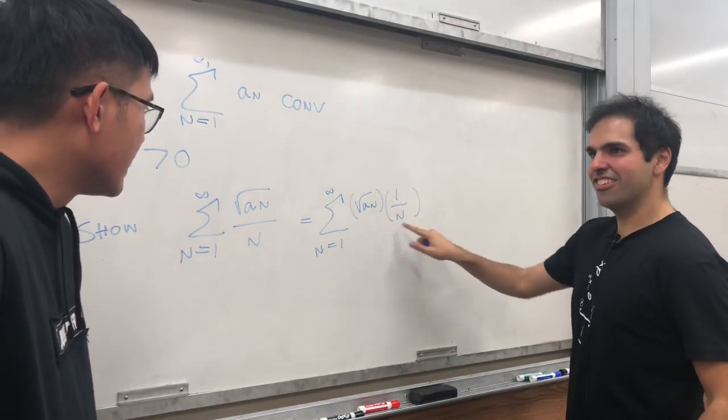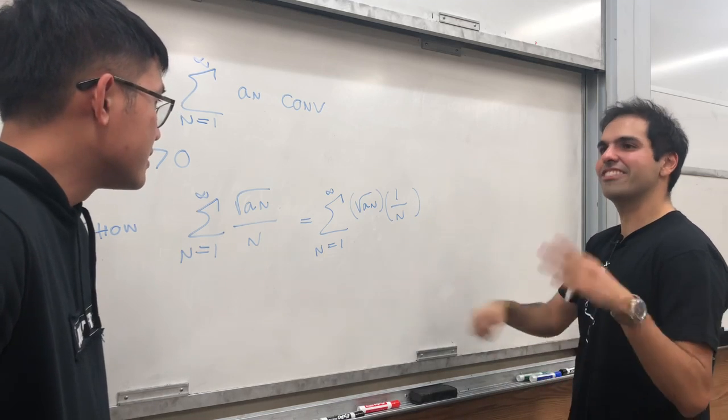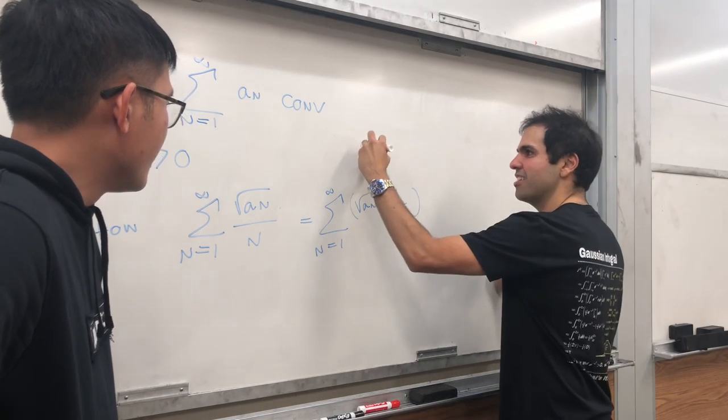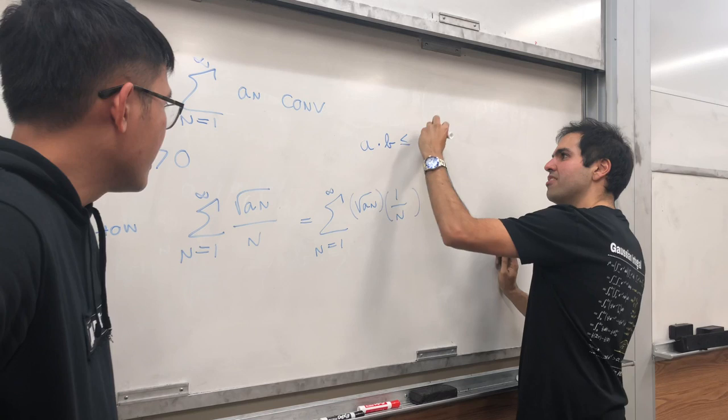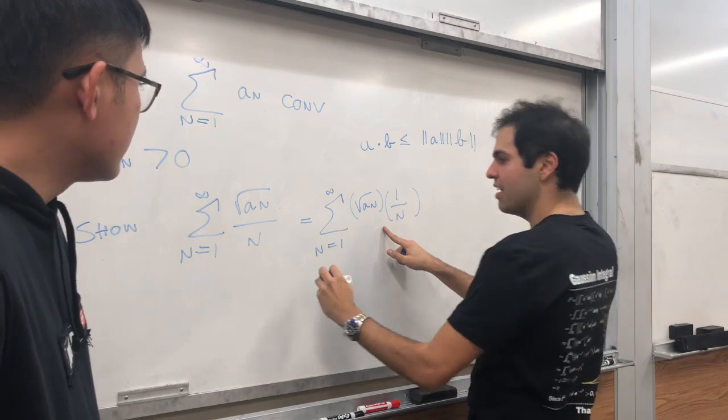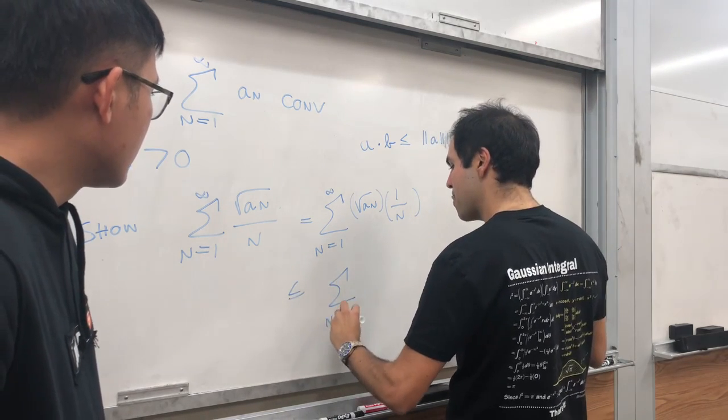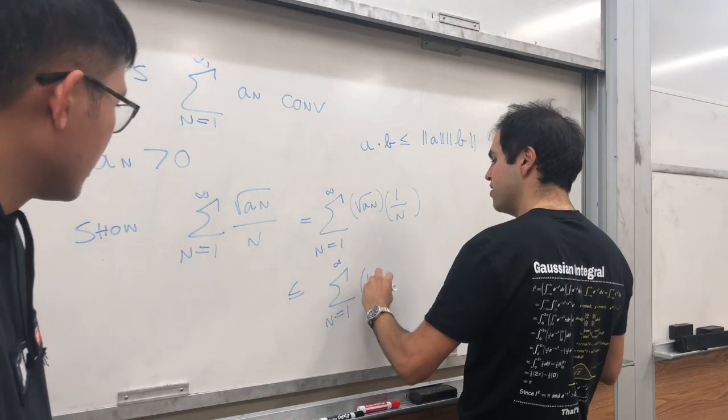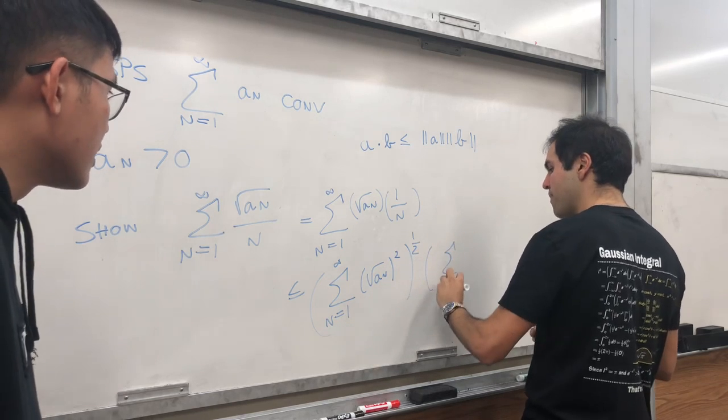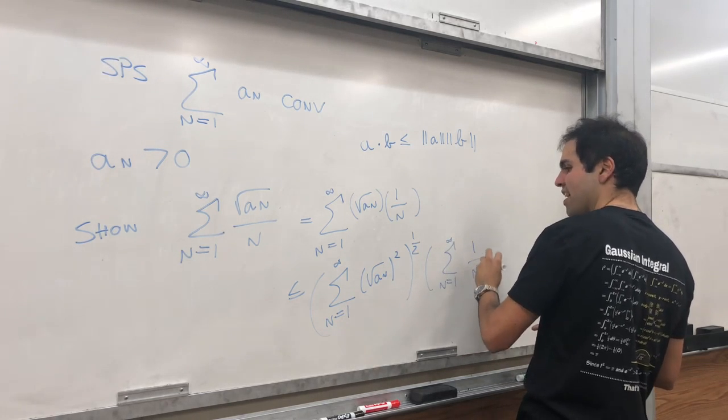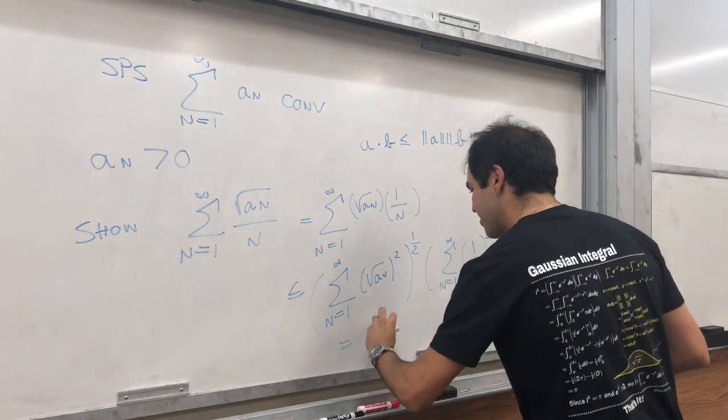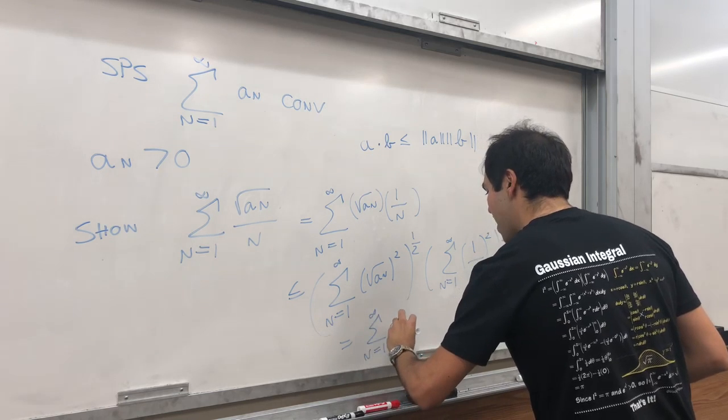Let me see it. This is a product of two things, right? Yes. It's the sum of a product, it's almost like a dot product. Use Cauchy-Schwarz. Because what does Cauchy-Schwarz say? A dot B is less or equal to the length of A and length of B. And this is like A dot B.